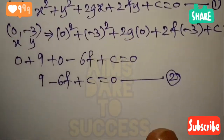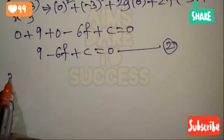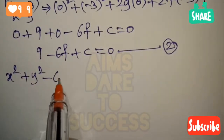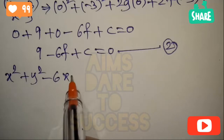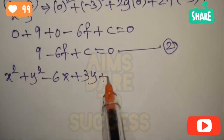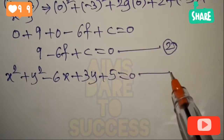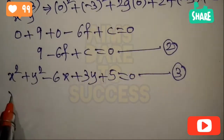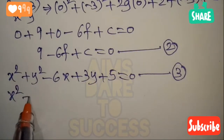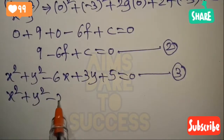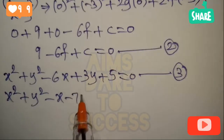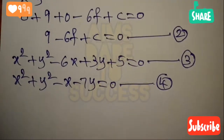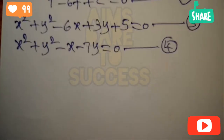Writing the given circles: x² + y² - 6x + 3y + 5 = 0 as equation 3, and x² + y² - x - 7y = 0 as equation 4.